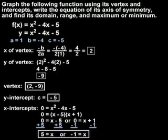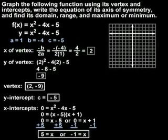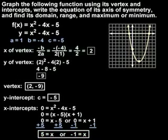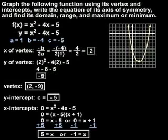Now that we have our vertex and intercepts, we're ready to graph. The vertex is (2, negative 9), the y-intercept is negative 5, and the x-intercepts are 5 and negative 1. Connecting these points with a smooth curve, we have our parabola. One nice thing about graphing parabolas is that if you've made a mistake with your vertex or intercepts, the parabola will not look right — so you have a built-in way of checking your work.